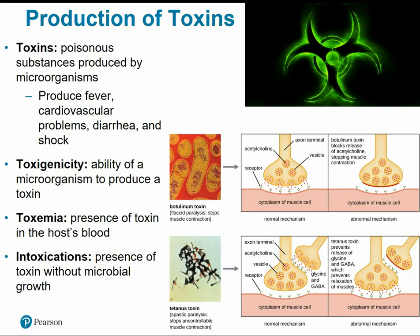Two well-known toxins are botulinum toxin and tetanus toxin. Botulinum toxin causes paralysis by stopping muscle contraction. Normally, acetylcholine binds to the muscle cell triggering contraction. Botulinum toxin blocks the release of that neurotransmitter, so the muscle never gets the signal to contract and is essentially paralyzed.